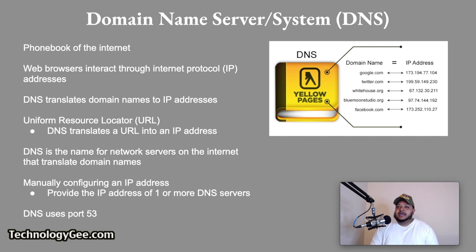Let's talk about domain name servers, or domain name systems. The domain name system is the phone book of the Internet. Humans access information online through domain names like Facebook and YouTube dot com, while web browsers interact through Internet Protocol addresses. DNS translates domain names to IP addresses so browsers can load Internet resources. When you enter a website name or click a link, the technical name for that is a uniform resource locator, also known as a URL. DNS works by translating a URL into the actual IP address used by that resource.